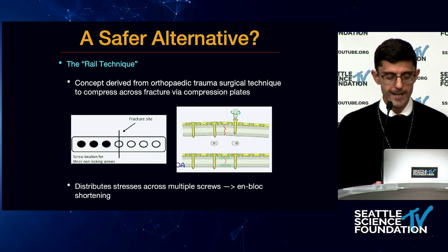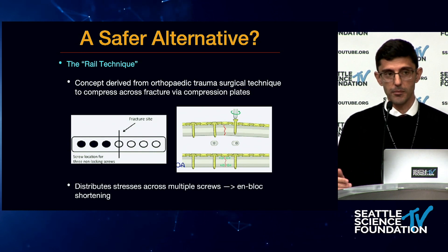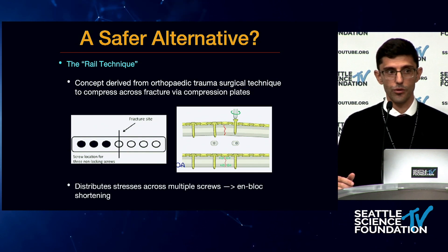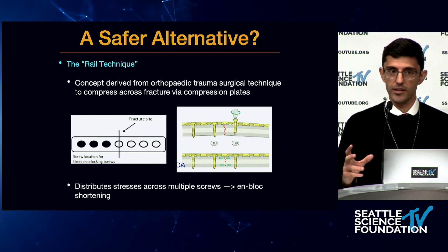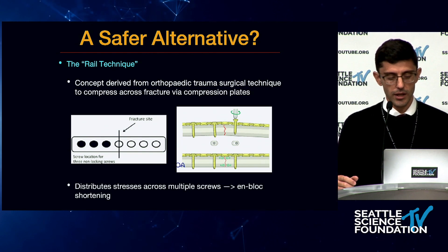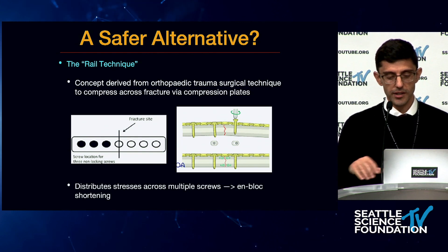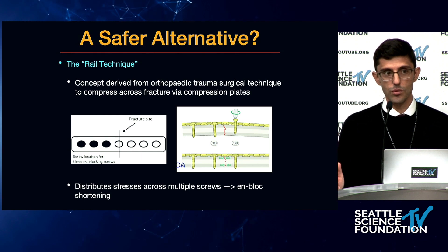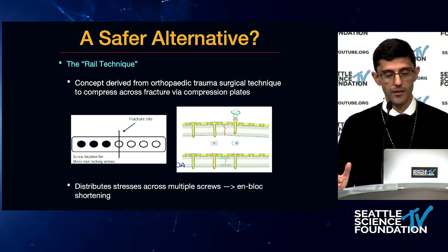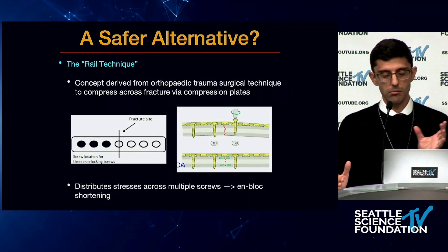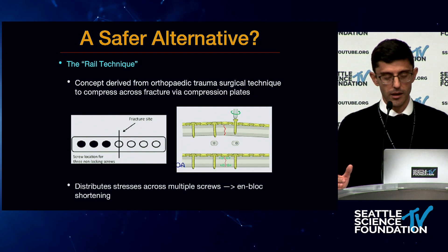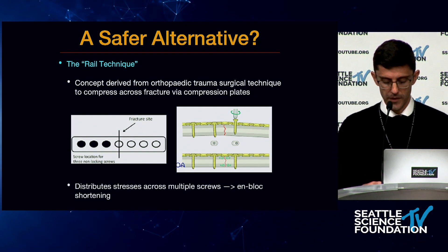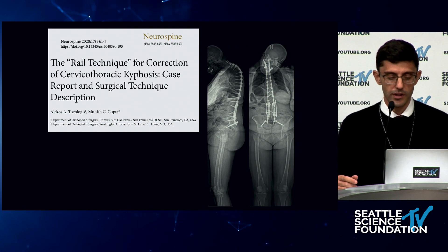The answer is the rail technique that Dr. Gupta taught me. The concept comes from orthopedic trauma, where you're compressing across a fracture — placing screws on one side of the fracture, then placing a screw asymmetrically through the plate. That creates unblocked compression of one side of the bone to the other.